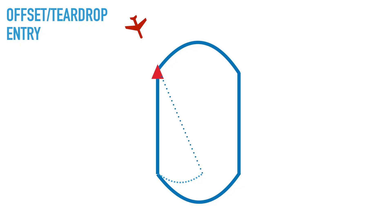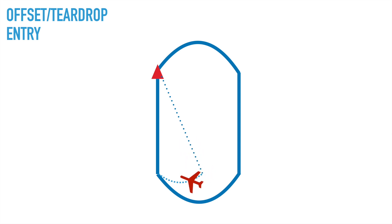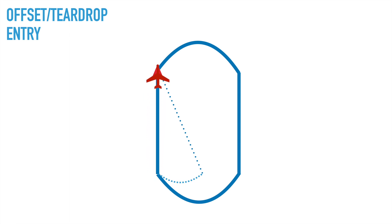The next type of hold entry is the offset entry. With this type, you approach from the opposite side of the fix, go directly to the fix, fly outbound at a 30-degree angle, turn around, and then fly inbound directly to the fix. Once you reach the fix, you keep circling to the right in a racetrack pattern.